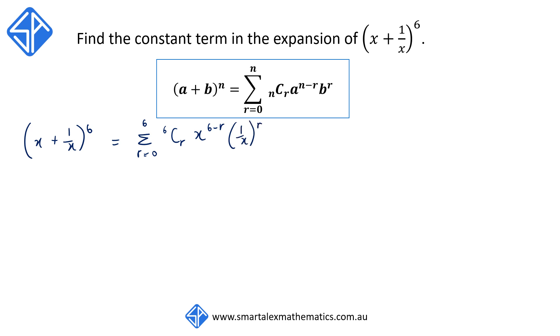This can be simplified to 6Cr x to the 6 minus r over x to the r. And applying the index law for division, this will reduce to x to the 6 minus r minus r or simply x to the 6 minus 2r.